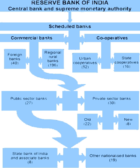Jayaprakash Narayan, a national leader of India, described the step as a 'masterstroke of political sagacity.' Within two weeks of the issue of the Ordinance, the Parliament passed the Banking Companies' Acquisition and Transfer of Undertaking bill, and it received the presidential approval on 9 August 1969. A second dose of nationalisation of six more commercial banks followed in 1980. The stated reason for the nationalisation was to give the Government more control of credit delivery. With the second dose of nationalisation, the Government of India controlled around 91% of the banking business of India. Later, in 1993, the Government merged New Bank of India with Punjab National Bank. It was the only merger between nationalised banks and resulted in the reduction of the number of nationalised banks from 20 to 19. Until the 1990s, the nationalised banks grew at a pace of around 4%, closer to the average growth rate of the Indian economy.